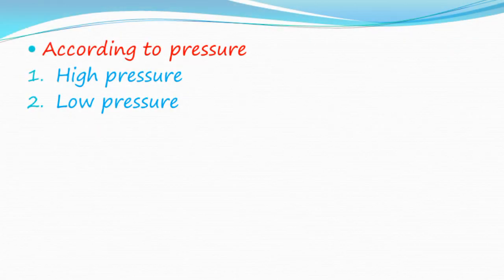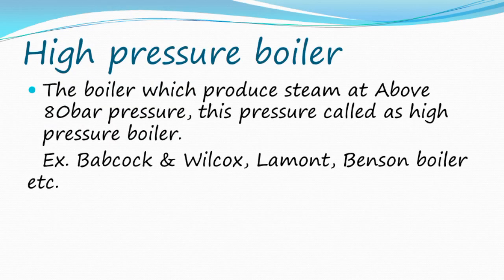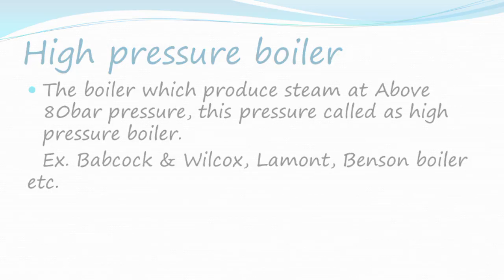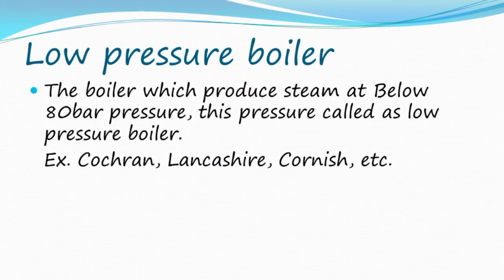Classification according to pressure: high pressure and low pressure. A high pressure boiler produces steam at above 80 bar pressure. Examples: Babcock and Wilcox, Lamont, Benson boiler, etc. A low pressure boiler produces steam at below 80 bar pressure. Examples: Cochrane, Lancashire, Cornish, etc.